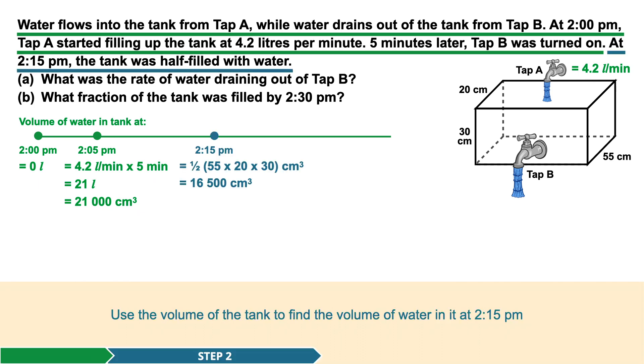Step 2. At 2:15 p.m., the tank was half-filled with water. Using the dimensions of the tank, we can find the volume of water at 2:15 p.m. Half times 55 cm times 20 cm times 30 cm gives us 16,500 cubic centimeters.